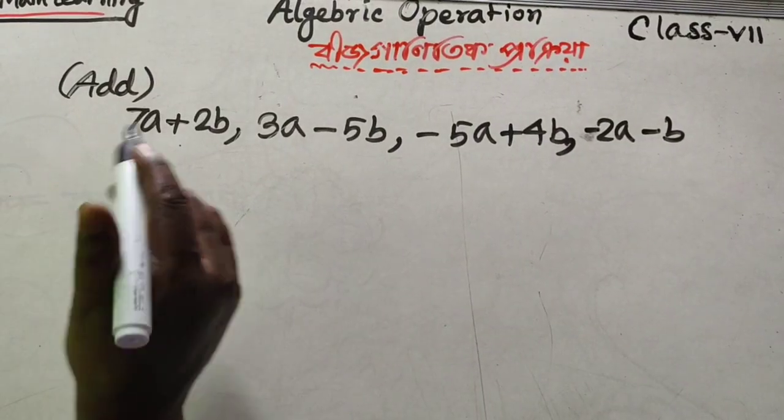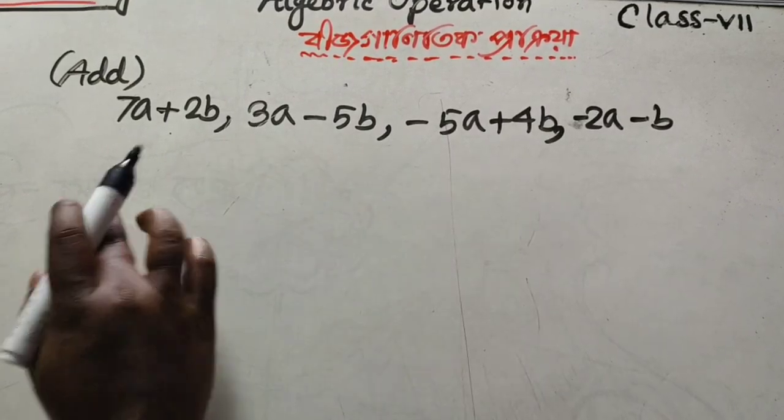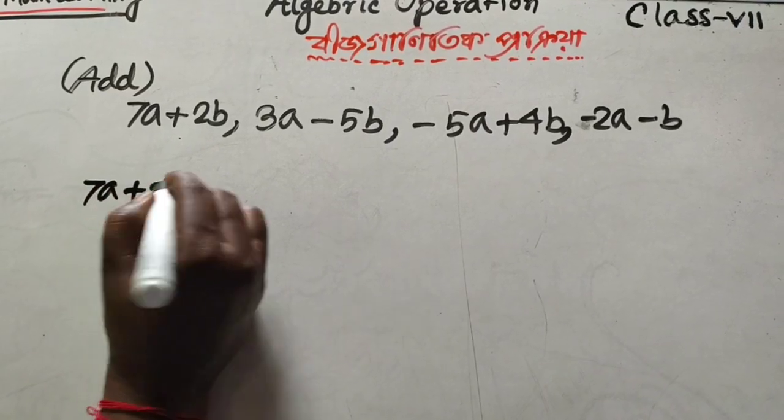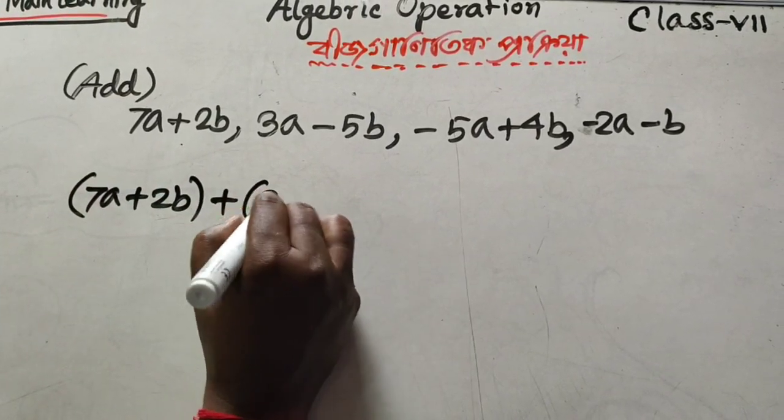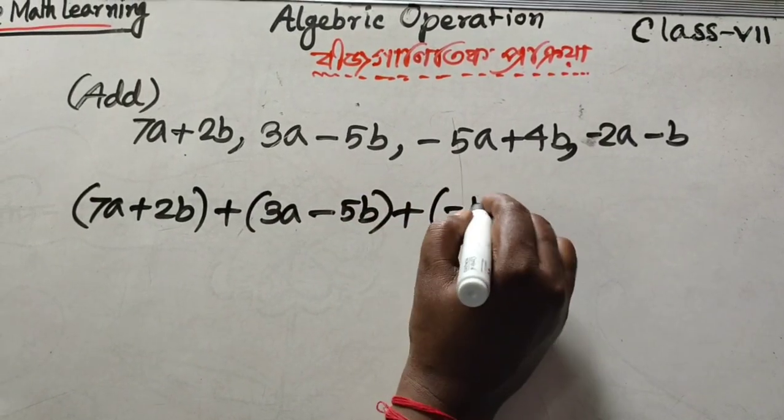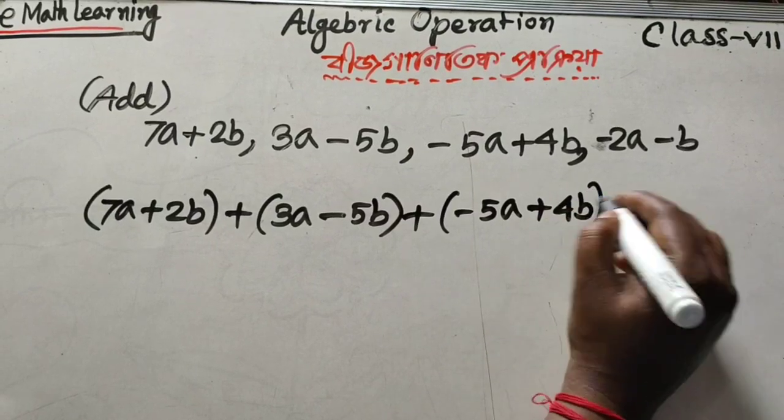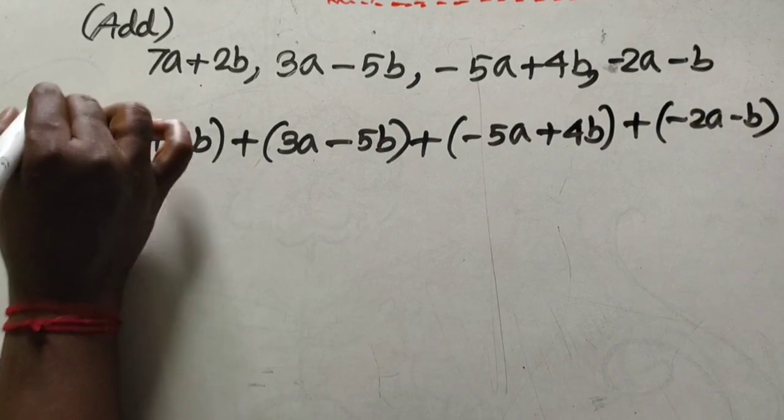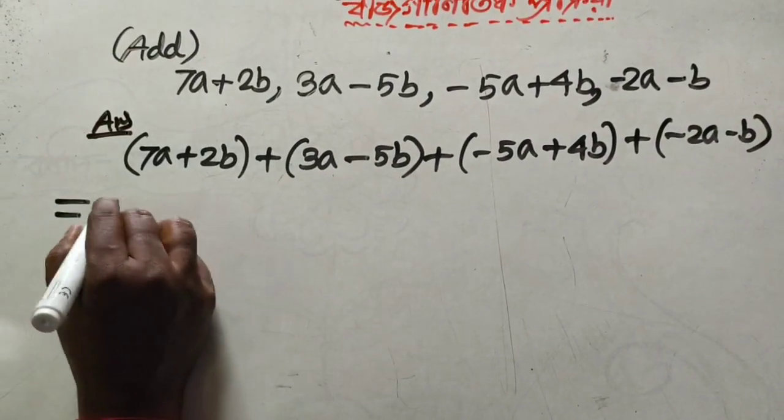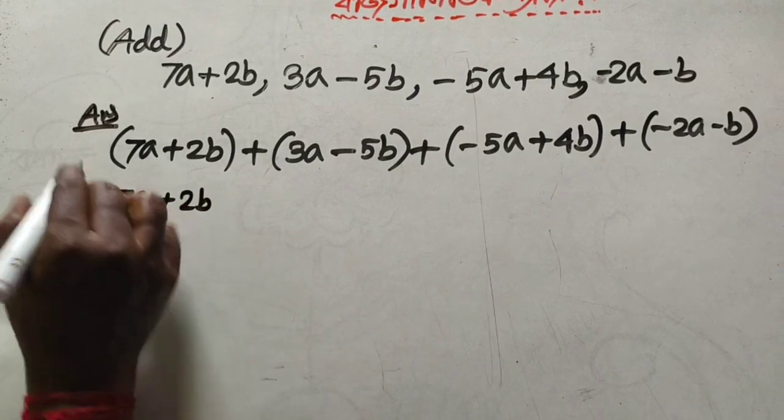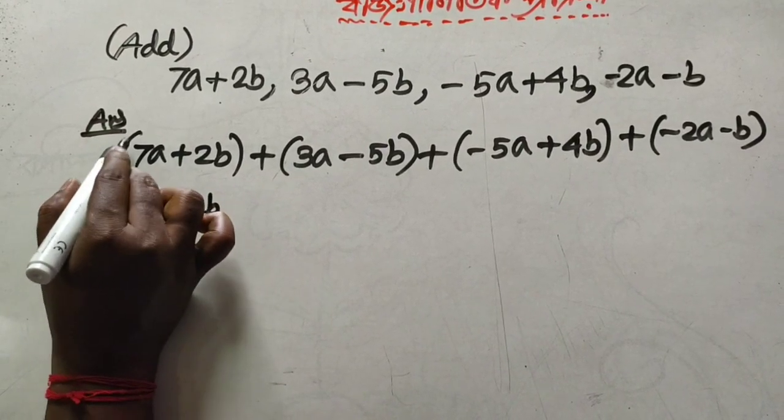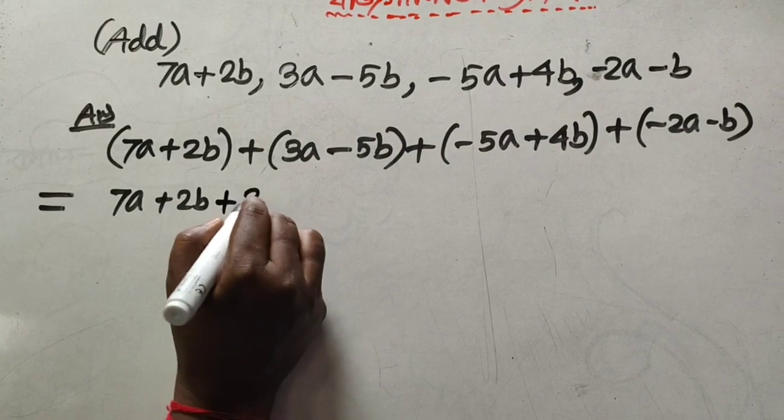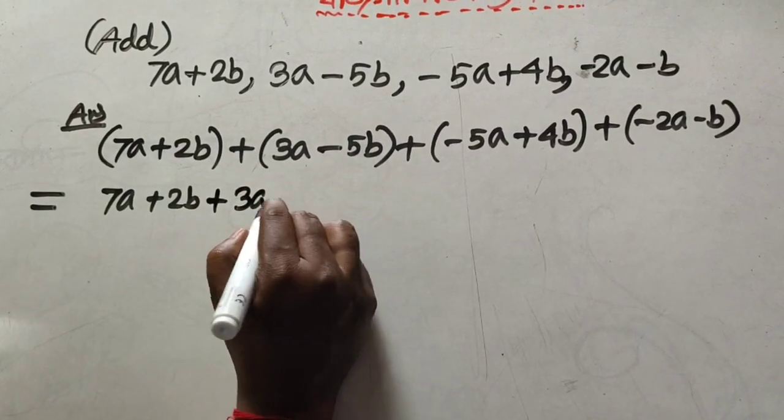We write the equation: (7a + 2b) + (3a - 5b) + (-5a + 4b) + (-2a - b). Here is the problem - we need to collect the like terms and find the answer.